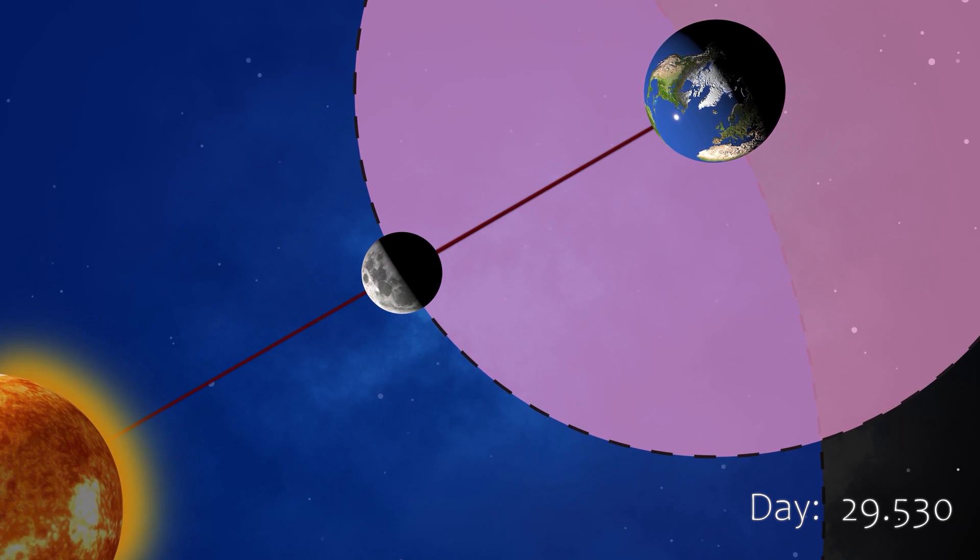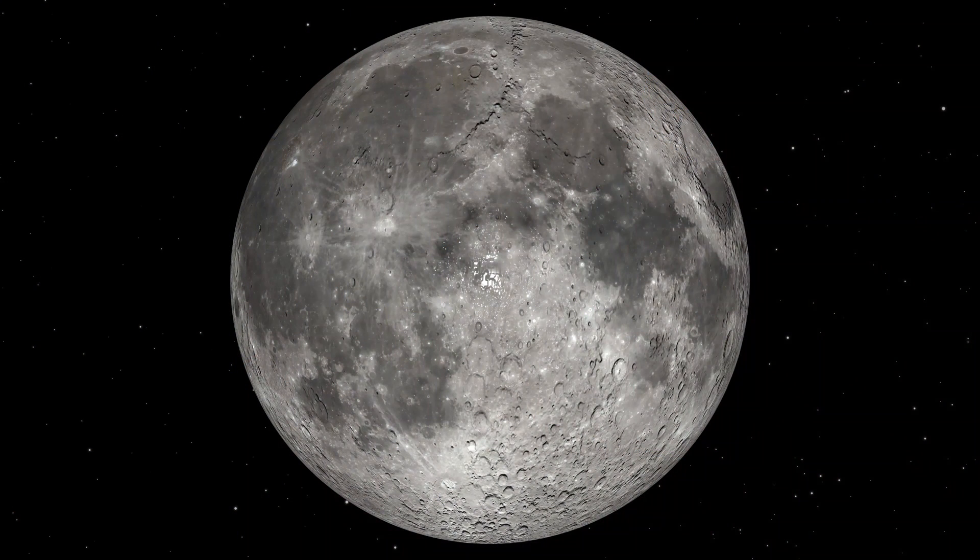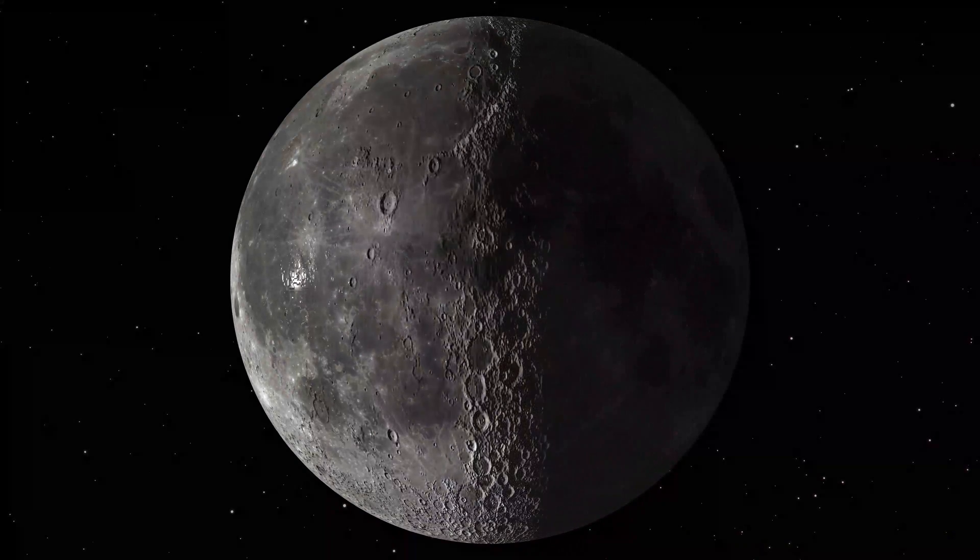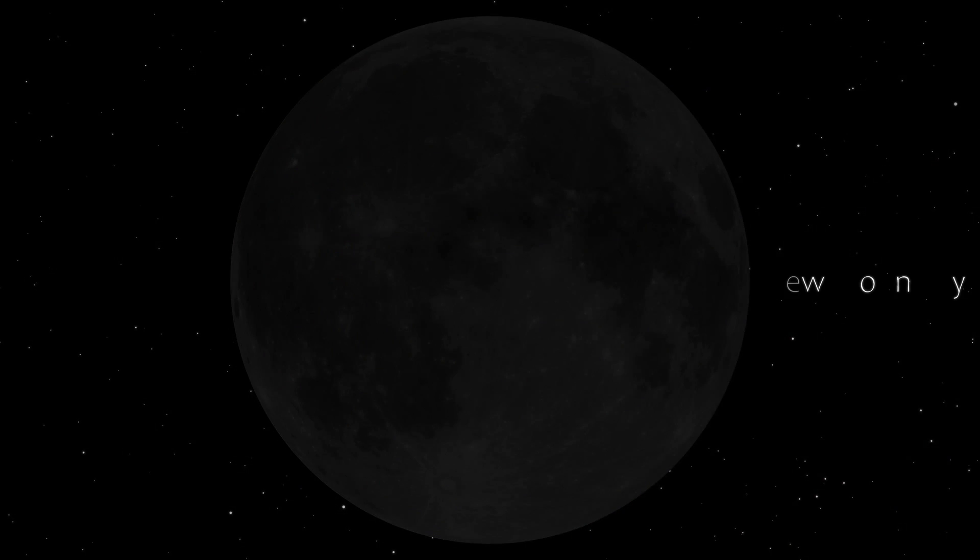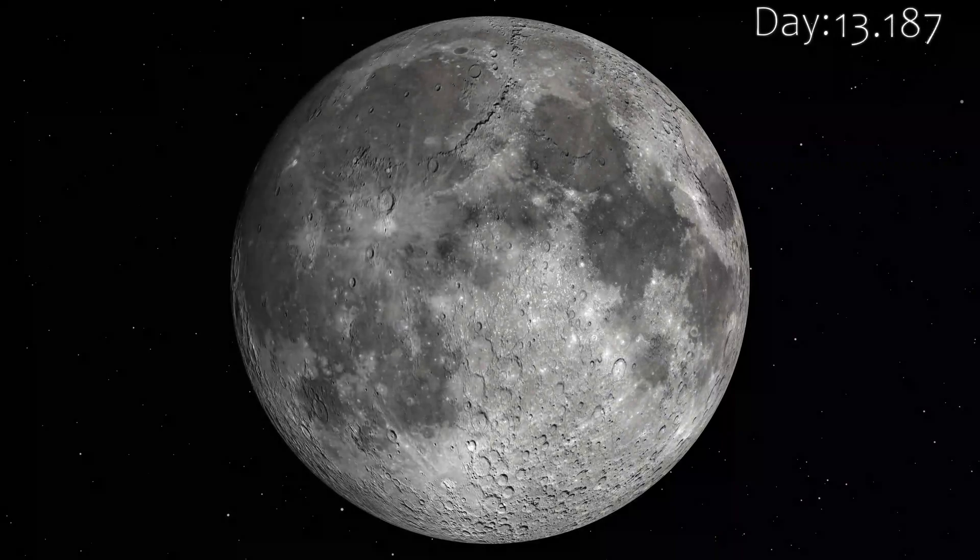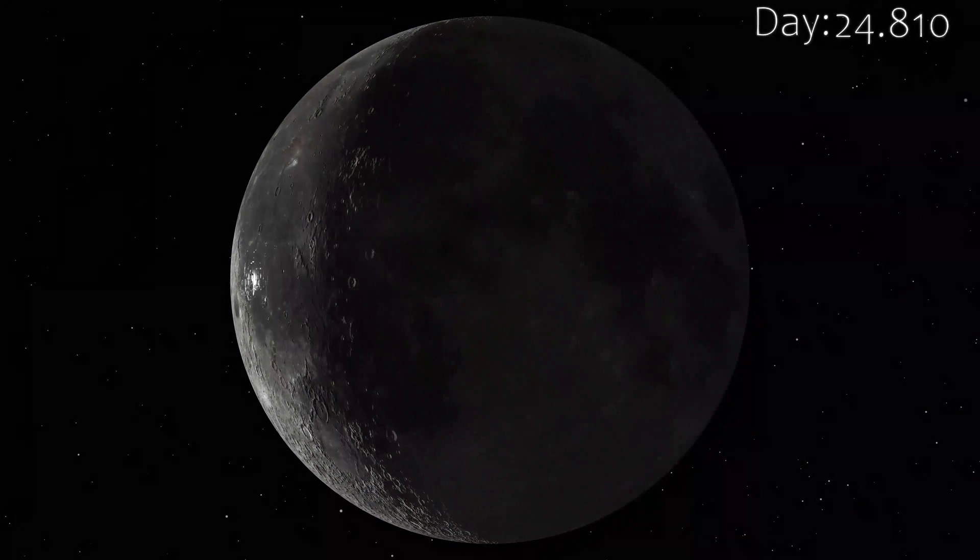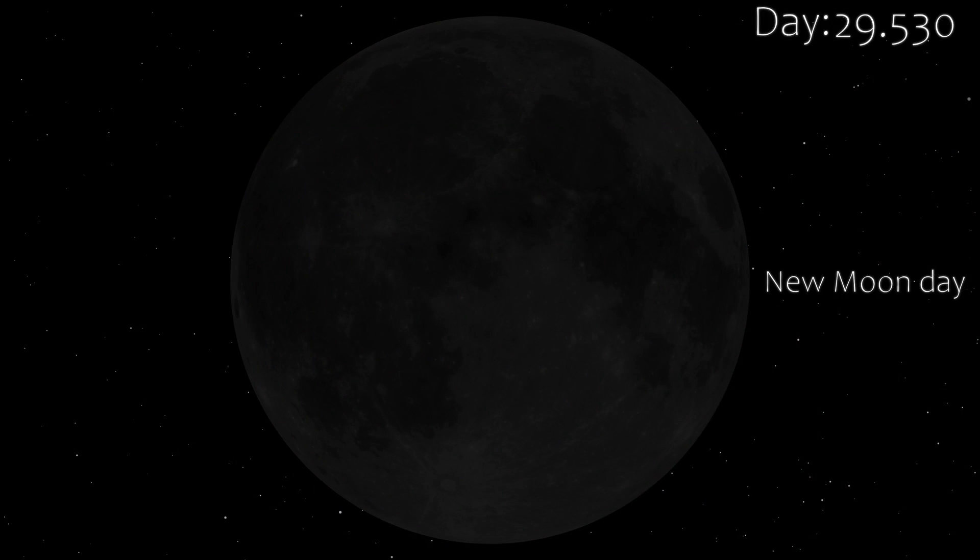We can also see this if we look at the moon and track the phases. Let's start with a new moon day and track the time it takes for the moon to reach the next new moon. We again see that it takes 29.53 days to complete the cycle.